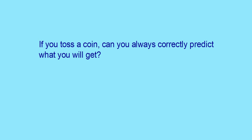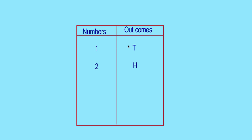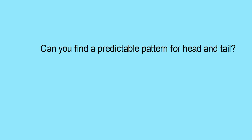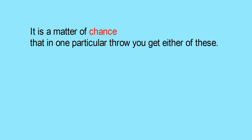If you toss a coin, can you always correctly predict what you will get? You toss a coin and write the number of times and the outcomes — the result of what you are getting. If it is a tail, write T, and if it is head, write H. The outcomes means the result of your activity. Do it for 20, 30, or 50 tries. Can you find a predictable pattern for head and tail? Of course you will not. It is a matter of chance that in one particular throw you get either head or tail.